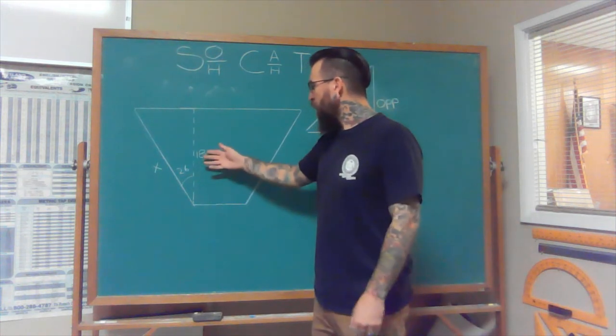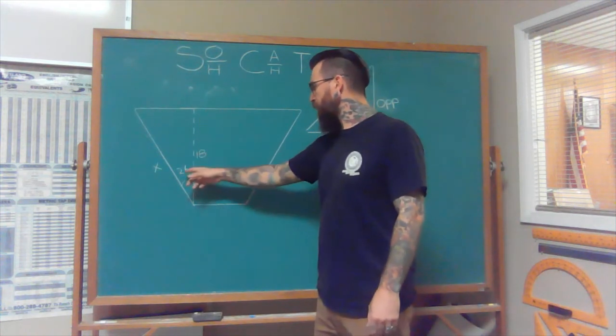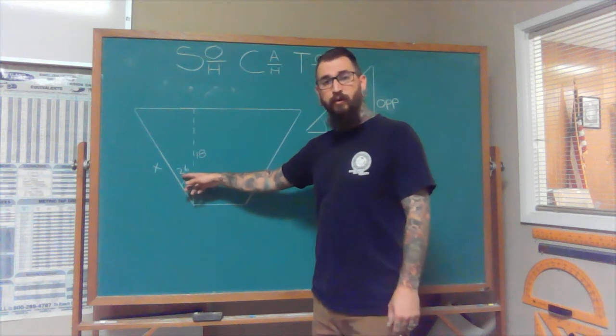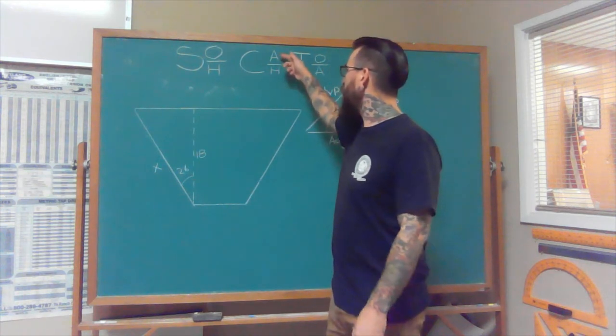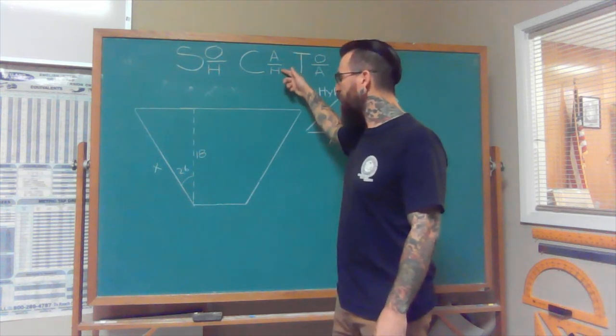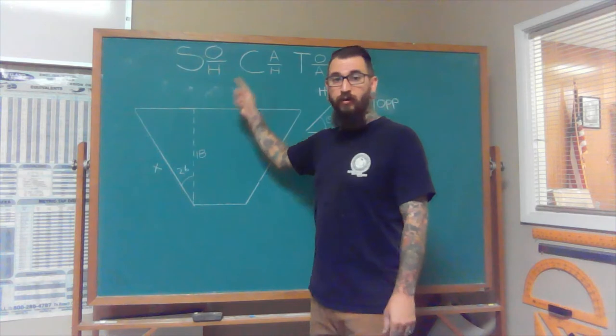So as I said, we know that we have one length of 18 and an angle of 26. So what are we going to do to figure that out? So if we know that we have an adjacent and we're looking for the hypotenuse, then we're going to use the cosine function.